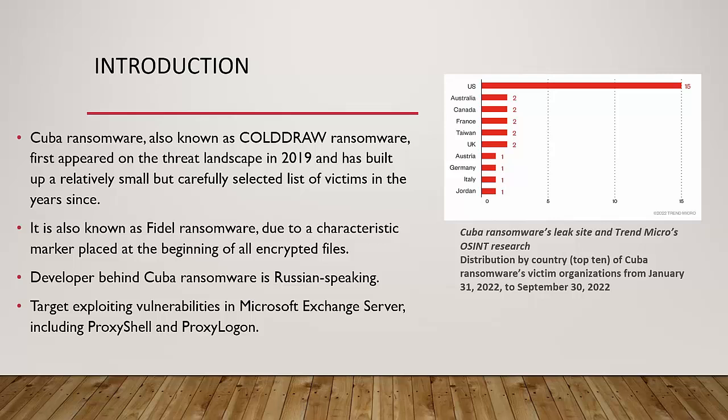Looking at the Cuba ransomware timeline: in 2021, the FBI reported the ransomware was being distributed through Hancitor malware. In January 2023, Microsoft stated Cuba ransomware operators were exploiting unpatched Microsoft Exchange servers. In May 2023, Cuba ransomware took credit for a recent cyber attack on Philadelphia. The FBI has reported on their tactics and techniques, noting they cause significant harm to organizational business.